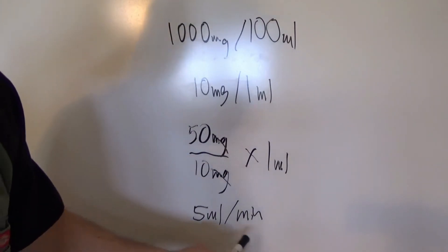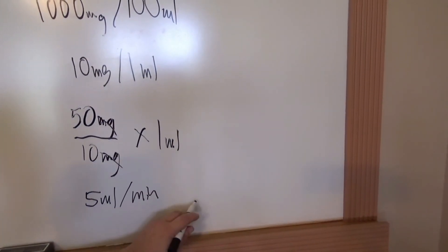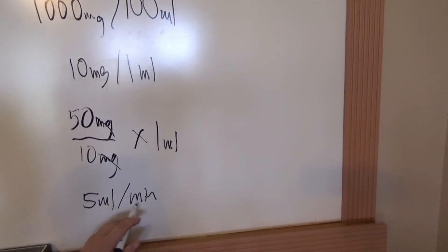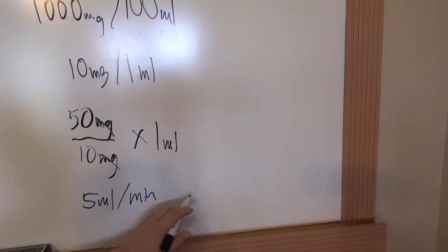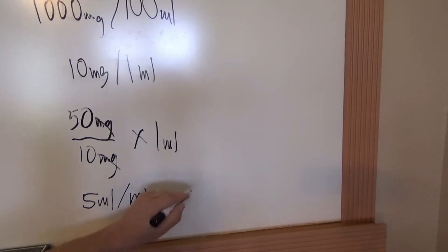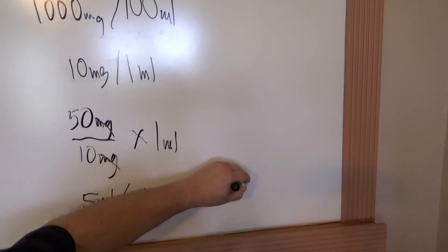So we can give 5 milliliters per minute. Our pumps are set in milliliters per hour, so we multiply 5 times 60 — because there are 60 minutes in an hour — to get 300 milliliters per hour.